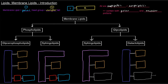Phospholipids contain a phosphate group, whereas glycolipids contain a carbohydrate portion. 'Glyco' refers to sugar, so it contains a carbohydrate portion. Once you have a phospholipid, there are two types: you can have a glycerophospholipid or you can have a sphingolipid — also called a sphingophospholipid or phosphosphingolipid.